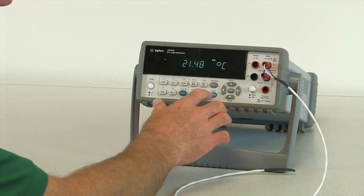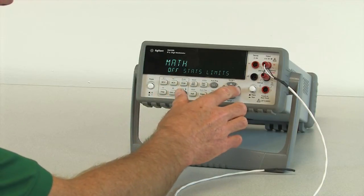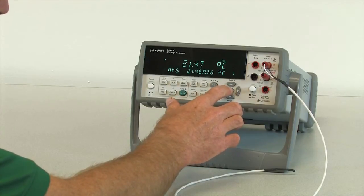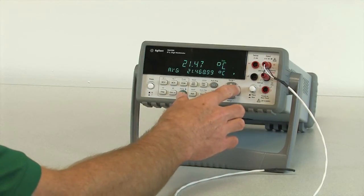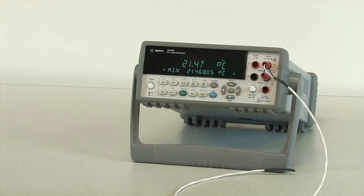The next one is math. We have a choice of doing limit testing or statistics. I'm going to select statistics, and as you can see, we can see the average, the max, and the min measurements of our temperature.